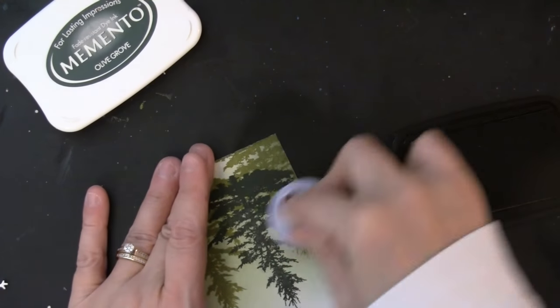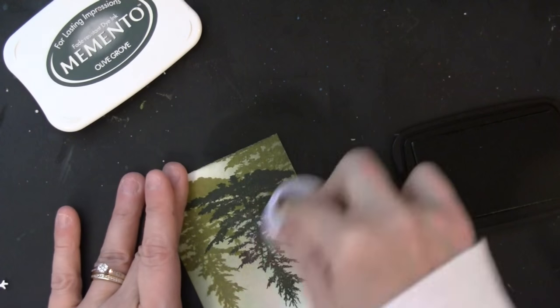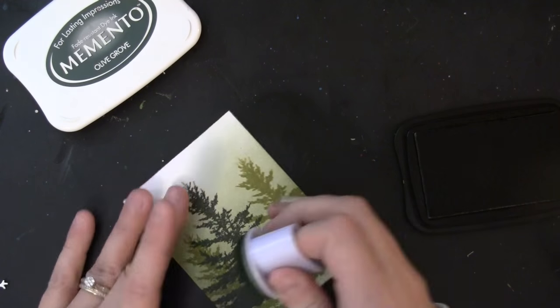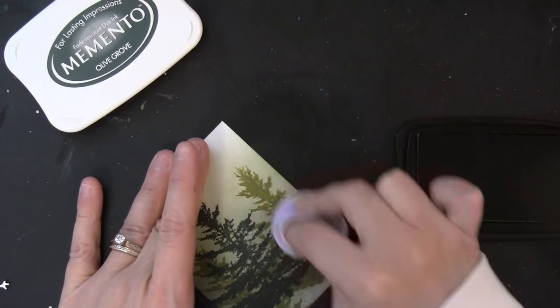Now I'm going to add a darker color of ink towards the bottom, and this is Olive Grove Memento ink. You could also use Distress inks or whatever inks you like to use for sponging your backgrounds.